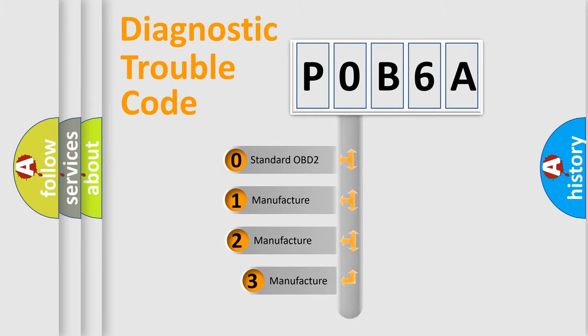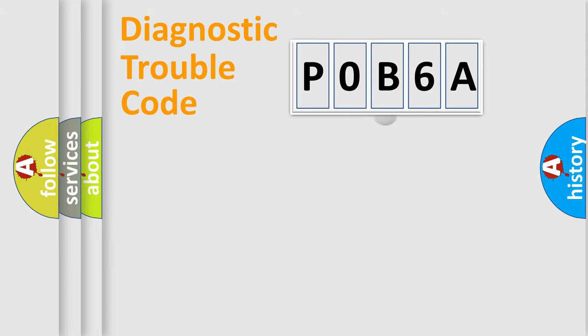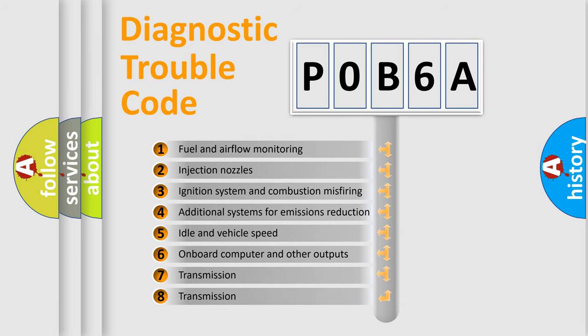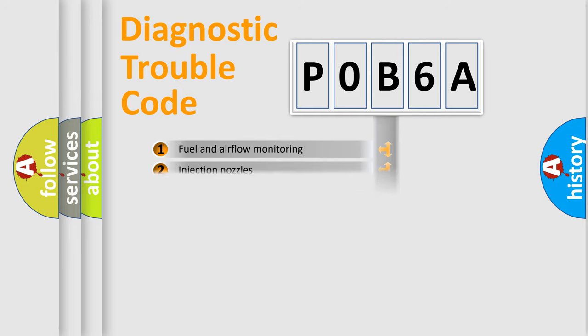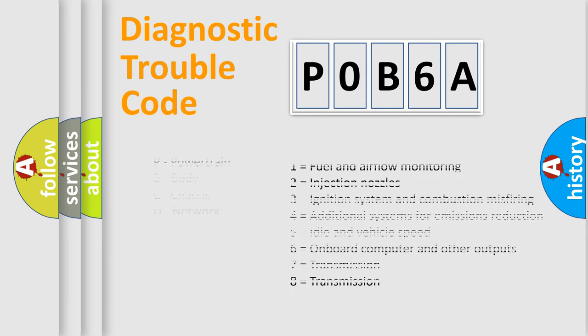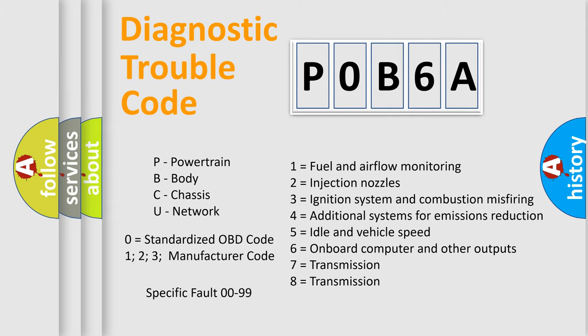If the second character is expressed as zero, it is a standardized error. In the case of numbers 1, 2, or 3, it is a more specific expression of the car-specific error. The third character specifies a subset of errors. The distribution shown is valid only for the standardized DTC code. Only the last two characters define the specific fault of the group. Let's not forget that such a division is valid only if the second character code is expressed by the number zero.